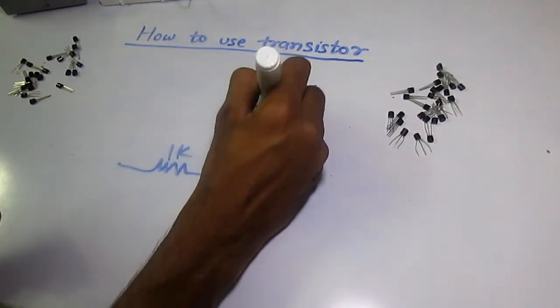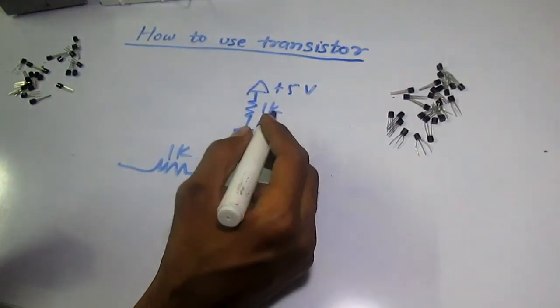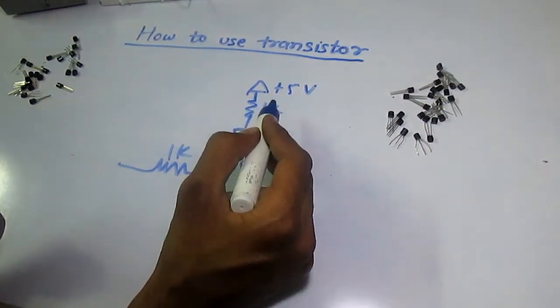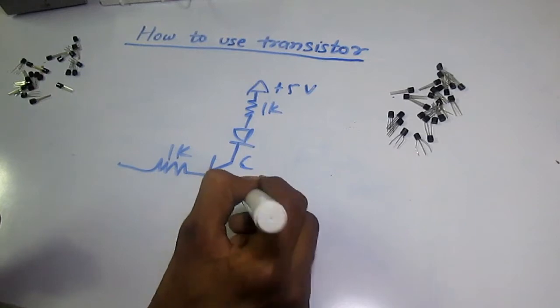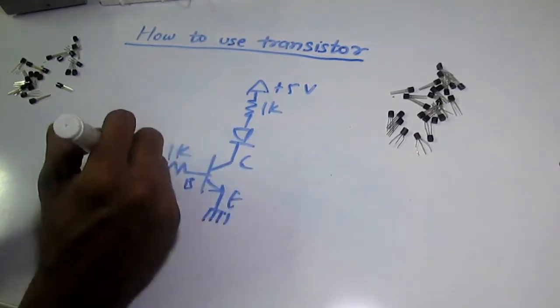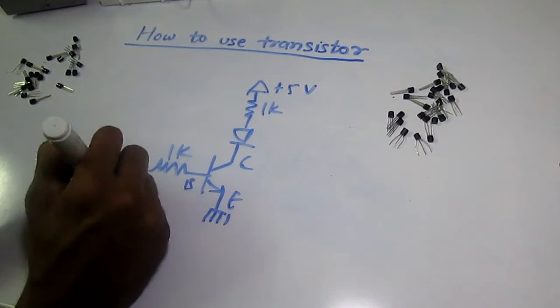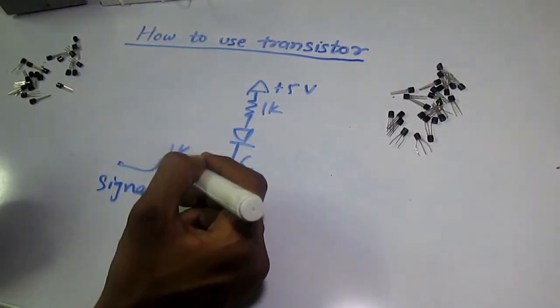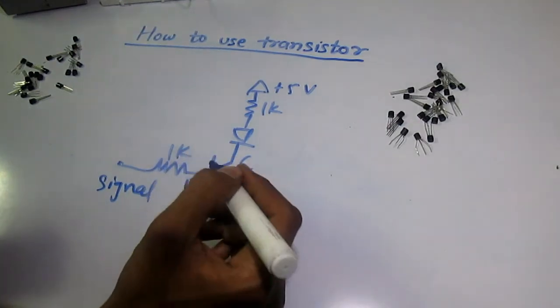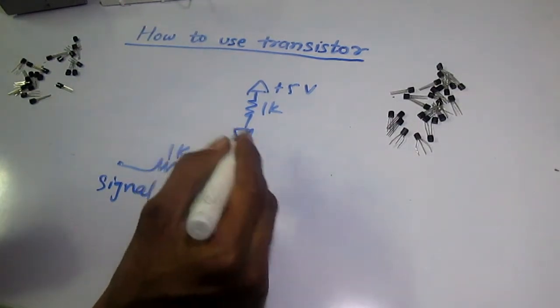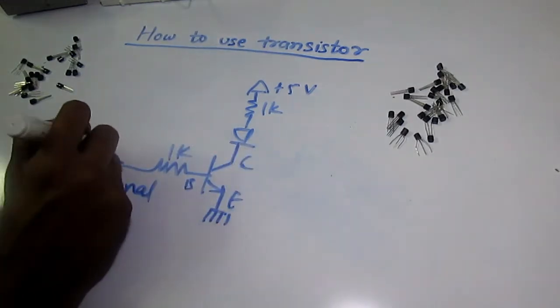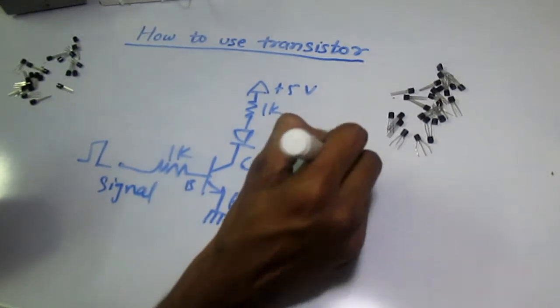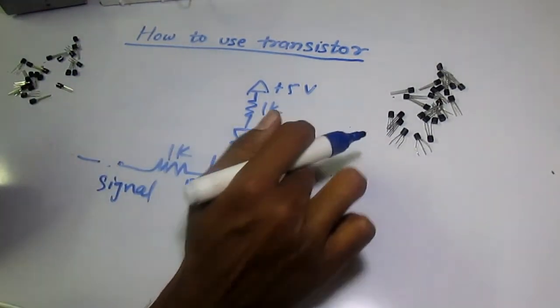First, connect the load to the collector, emitter to the ground, and the base through a resistor. The resistor is needed because the base requires very low current to turn on the transistor. Whenever you give a high pulse, the LED will turn on, and if you give a low pulse, the LED will turn off.